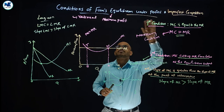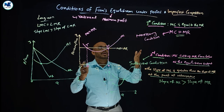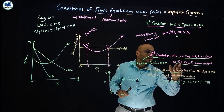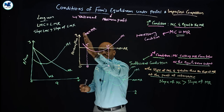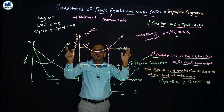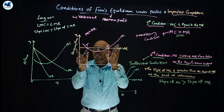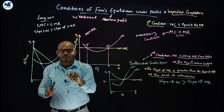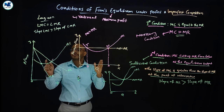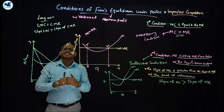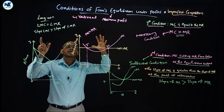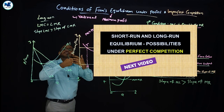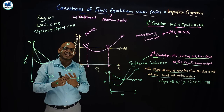To summarize: there are two conditions for firm's equilibrium. First, MC equals MR. Second, MC cuts MR from below at the equilibrium output. These apply to both perfect and imperfect competition. In the coming videos, we will discuss short-run and long-run equilibrium of perfect competition in detail, including the MC, AR, and MR curves in diagrams. Thank you, have a nice day.